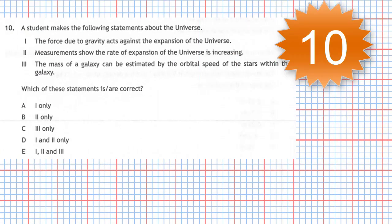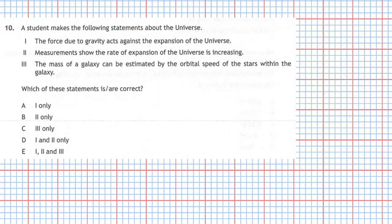Question 10 from section 1 of the 2019 Higher Physics examination. A student makes the following statements about the universe: Statement 1 - The force due to gravity acts against the expansion of the universe. Statement 2 - Measurements show that the rate of expansion of the universe is increasing. Statement 3 - The mass of a galaxy can be estimated by the orbital speed of the stars within the galaxy.